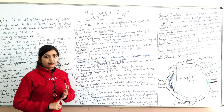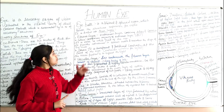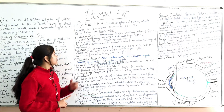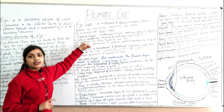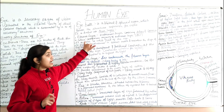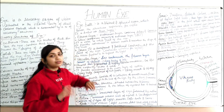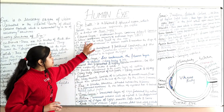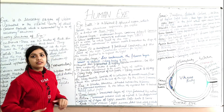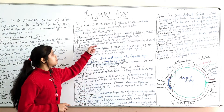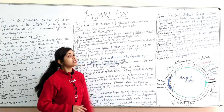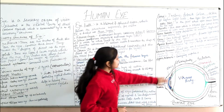The outer layer is the fibrous layer, containing the sclera and cornea. The sclera makes up about 85 percent of the outermost layer and is visible as the white part of the eye. It provides attachment to the extraocular muscles and helps maintain the shape of the eyeball.